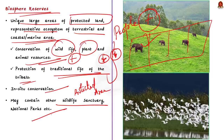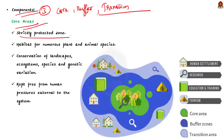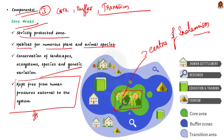A biosphere reserve has three components: core areas, buffer zones, and transition areas. The core area comprises a strictly protected zone that includes habitat for numerous plant and animal species and may contain centers of endemism. It contributes to the conservation of landscapes, ecosystems, species, and genetic variation. The core zone is to be kept free from human pressures external to the system. The green-colored zone in the image represents the core area.